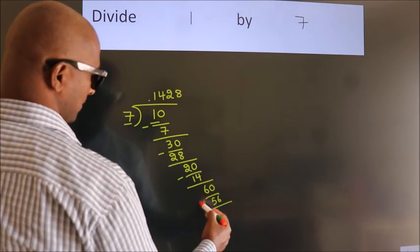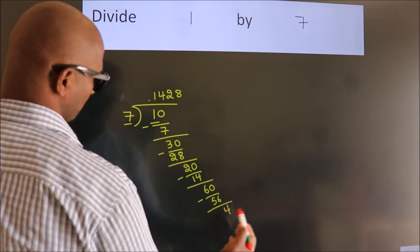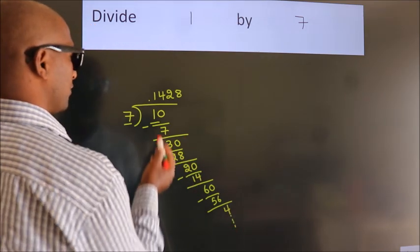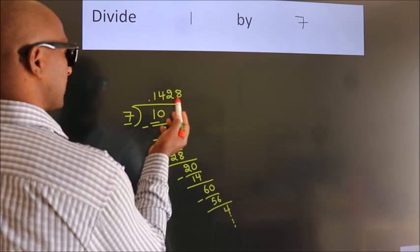Now, we subtract. We get 4. And the division continues. It is enough if we do up to 4 decimal places.